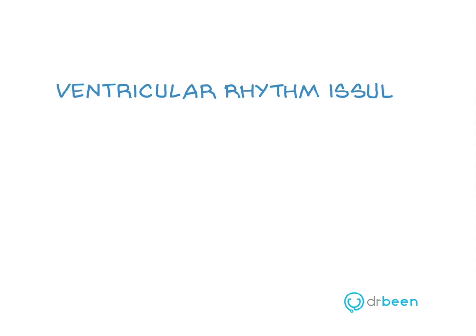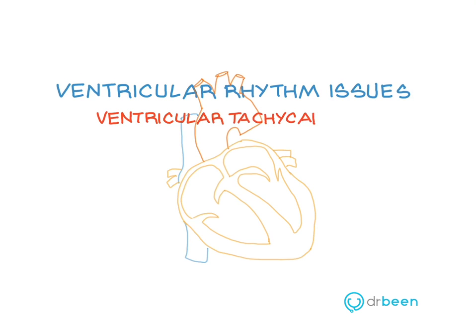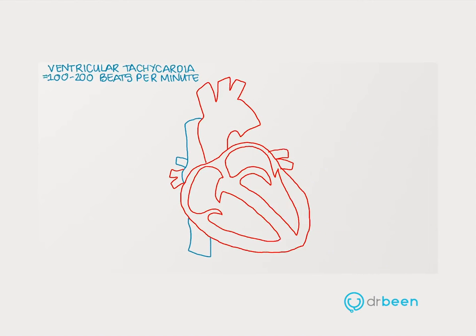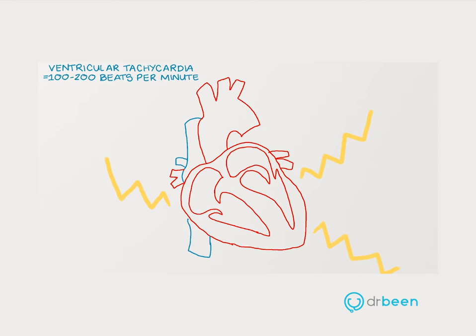In this lecture, we will discuss ventricular tachycardia, also known as VTAC. VTAC is defined as a rapid and repetitive firing of three or more PVCs in a row, with a rate of 100 to 250 beats per minute originating in the ventricles of the heart.